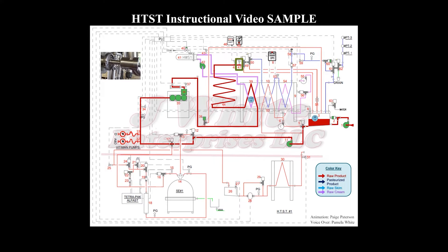Asset 47. The safety thermal limit recorder sensor monitors the temperature of the raw milk as it leaves the end of the holding tube and sends it to the safety thermal limit recorder. Asset 48. The safety thermal limit recorder generates a legal record of all HTST operations. This is where the set point for the cut-in temperature of 174.5 degrees and the cut-out temperature of 173 degrees are located. The cut-in and cut-out set points control the position of the flow-divert valve and the leak-detect valve.